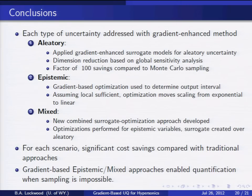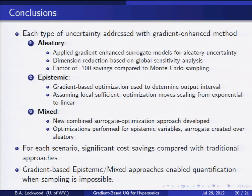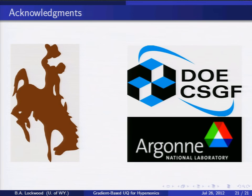In conclusion, during my research and time on the fellowship I developed different strategies for all the different forms of uncertainty encountered in hypersonic fluid flows, and shown that gradient information can be quite powerful in reducing the associated cost. In some cases, it makes uncertainty quantification actually possible, as opposed to traditional approaches where you just can't do it. I'd like to acknowledge the support of my advisor at the University of Wyoming, everybody associated with the CSGF program and the Krell Institute, and my collaborator at Argonne, Mihai.